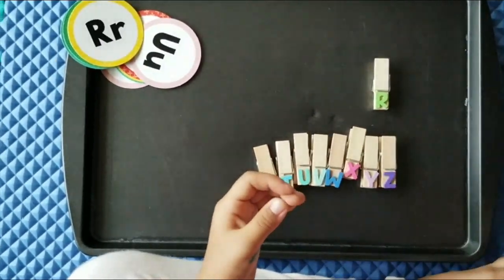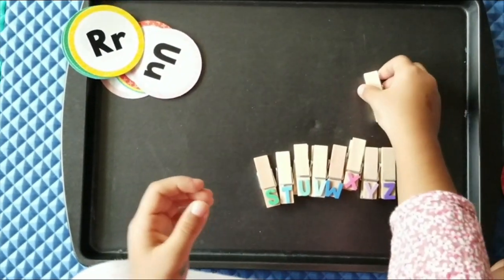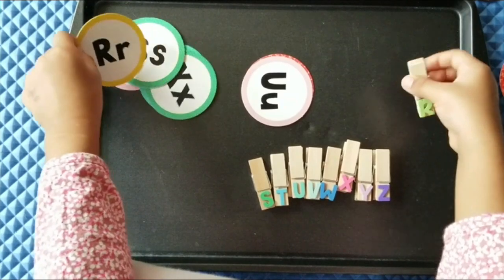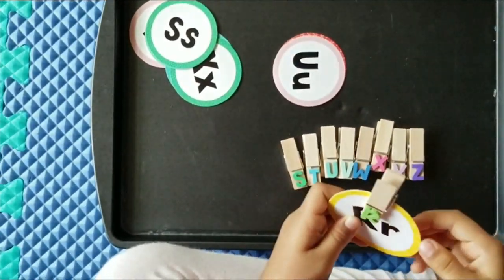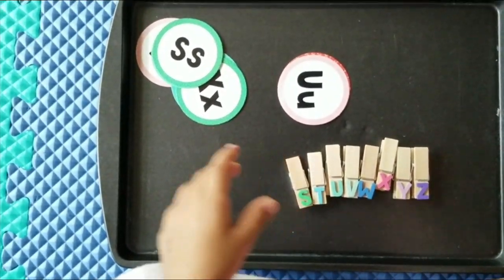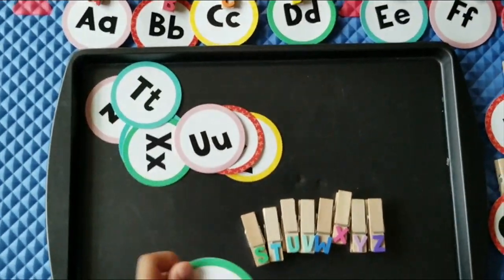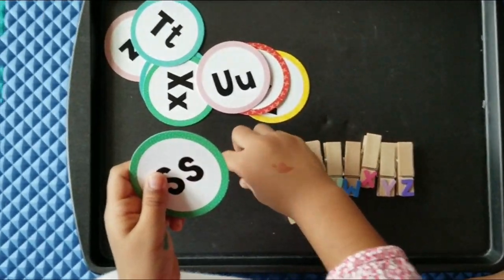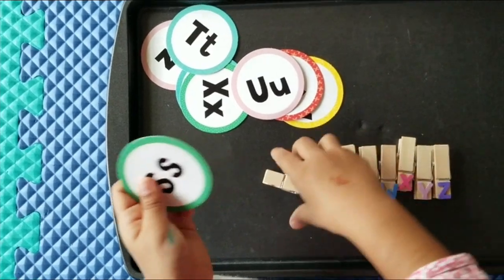This is the letter R. It sounds R. Rat. This is the letter S which sounds S. Snake.